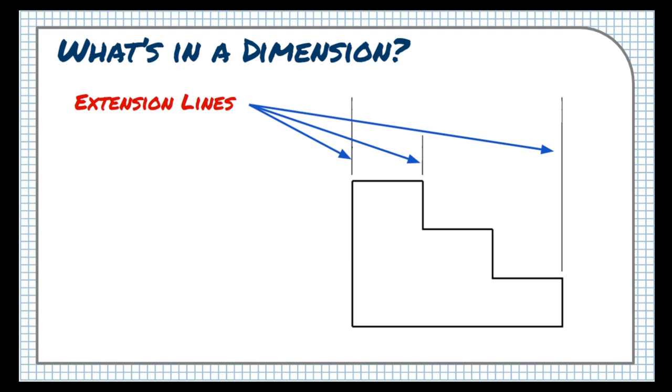If two dimensions refer to the same edge of the object, as shown here, the extension line for that edge is extended further, and the larger dimension is placed outside the smaller one. But we don't see two extension lines extending from the same edge.